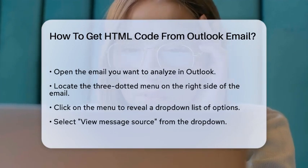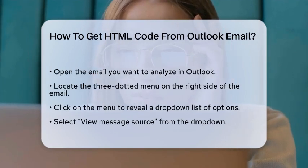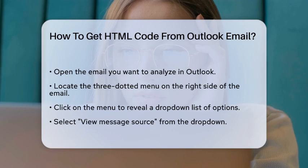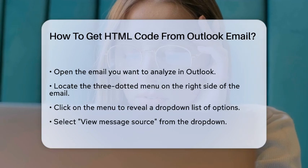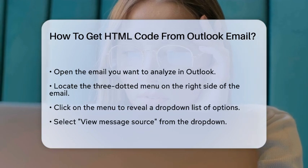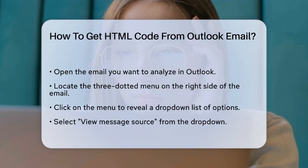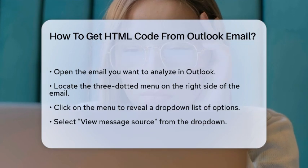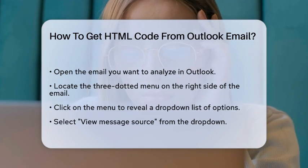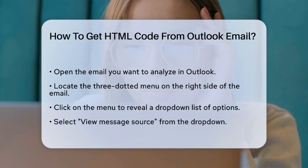Once you've opened it, look for the three-dotted menu on the right side of the email. Click on this menu, and you'll see a drop-down list of options. From this list, select View Message Source.